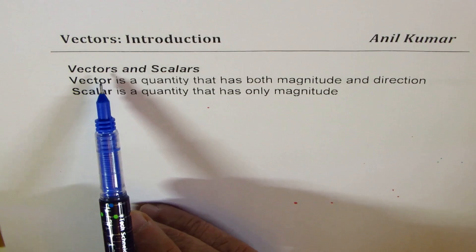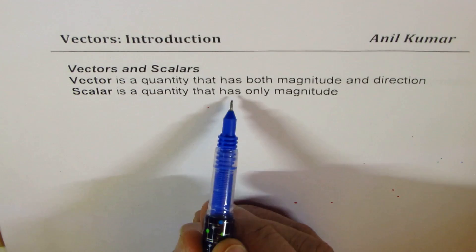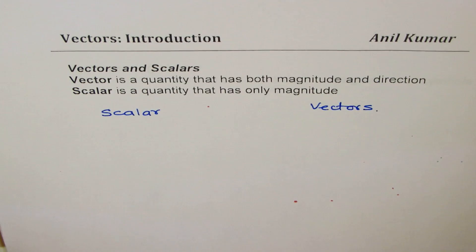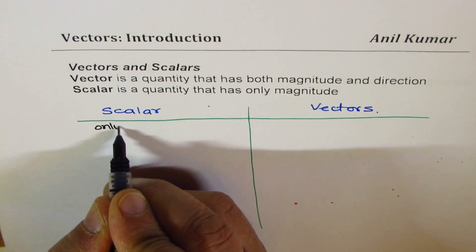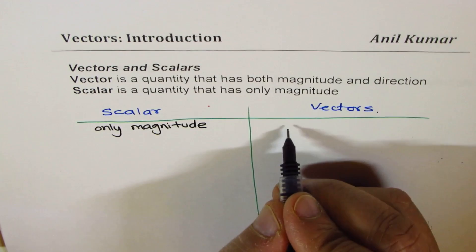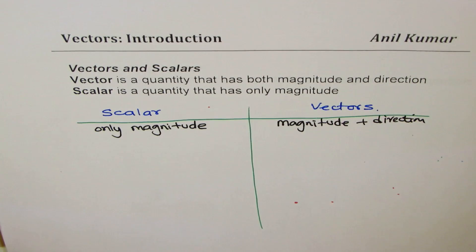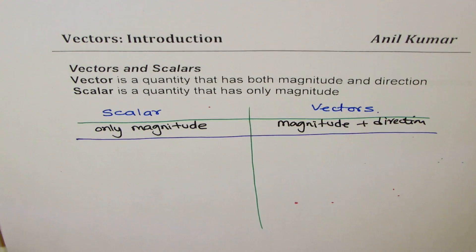Now let's talk about vectors and scalars. A vector is a quantity that has both magnitude and direction — simple as that. A scalar is a quantity that has only magnitude. I would like you to make a list of items you think are scalars — where only magnitude is needed — and items where magnitude plus direction is required.